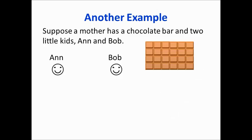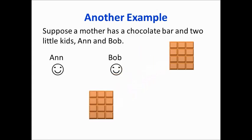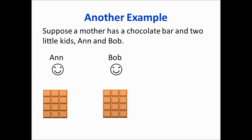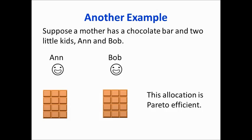Now let's look at another possible allocation of the chocolate: give half to Anne and half to Bob. Is this Pareto efficient? Yes — we cannot make somebody better off without making somebody worse off. Any reallocation would require taking some chocolate away from one person to give to the other, which would make that person worse off. So this allocation is also Pareto efficient.